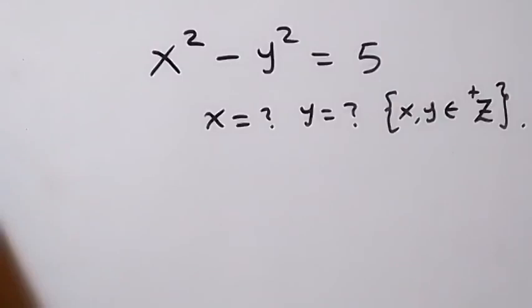Hello, you are welcome. How to solve for x and y in this nice algebra problem. From here we have x squared minus y squared equals 5.